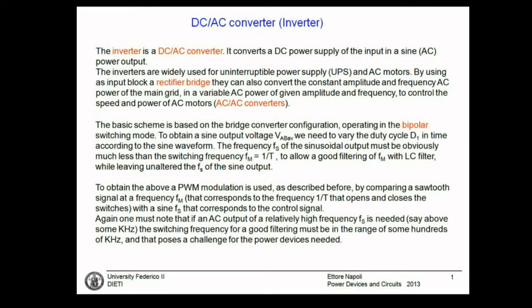This is very useful in many applications and nowadays very important, for example, for photovoltaic and solar energy-based installations. In many cases, when you have a battery or a photovoltaic energy supply, the output voltage that you get is a DC voltage — variable in time, not very precise, with a lot of problems — but it's a DC input. If you want to supply the general electric network, you need to have a sinusoidal output: 50 Hz, 330 volts AC.